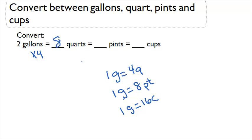Now let's work on the pints. We have two gallons again, and we're going to multiply by eight to find our pints because every one gallon has eight pints in it. So two gallons times eight will give us 16 pints. There are 16 pints in eight quarts, which are the same thing as two gallons.